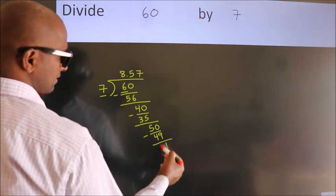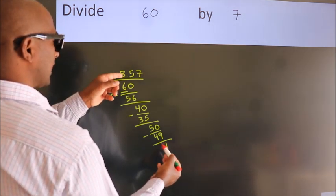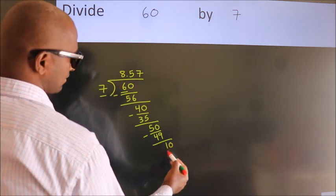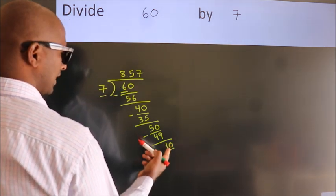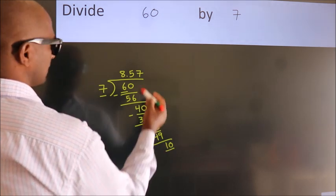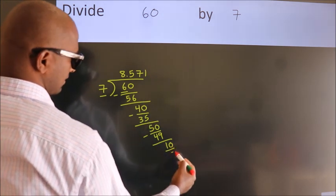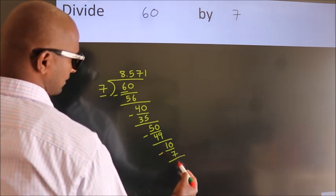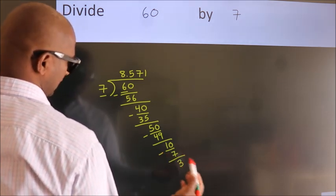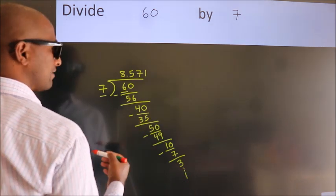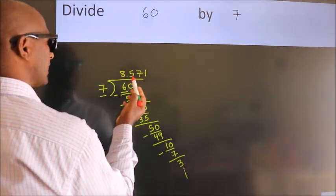After this, we already have the decimal. So directly take 0. So, 10. A number close to 10 in 7 table is 7, 1, 7. Now we subtract. We get 3. And the division continues. It is enough if we do up to 3 decimal places.